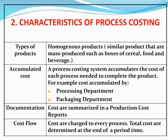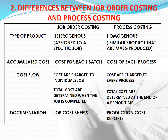Differences between job order costing and process costing. Job order costing: type of product is heterogeneous, assigned to a specific job; costs accumulate for each batch; costs are charged to individual jobs and total costs are determined when the job is completed; documentation uses job cost sheets. Process costing: type of product is homogeneous — similar products that are mass produced; costs accumulate for each process; costs are charged to every process and total costs are determined at the end of a period; documentation uses production cost reports.